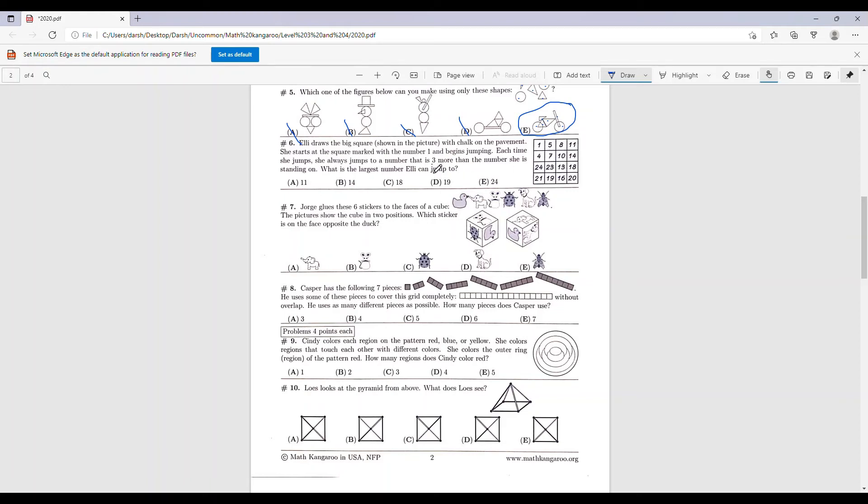But we want to jump on the one that is 3 more than the number she is standing on. So what's 3 more than 1? We know it's 4, so we're going to go this way. Now after 4, we can either go to 7 or 24. 7 is 3 more, so we're going to go to 7. Next we have either 5, 10, or 23, or 4.